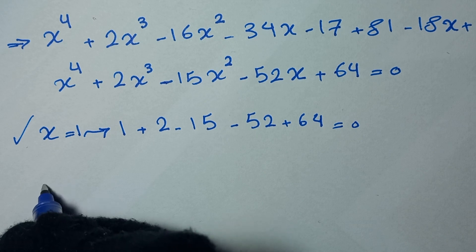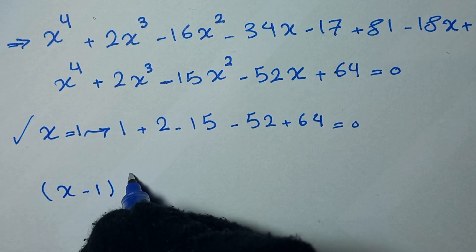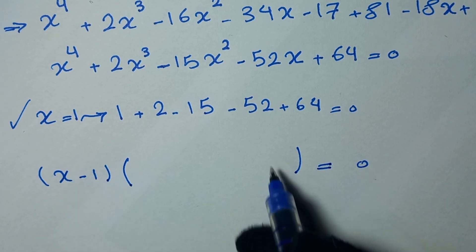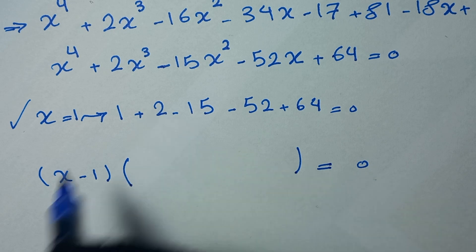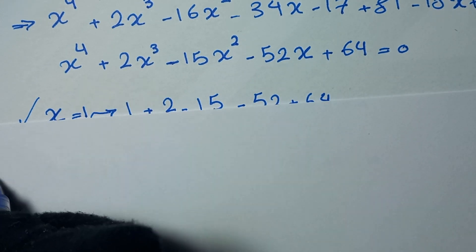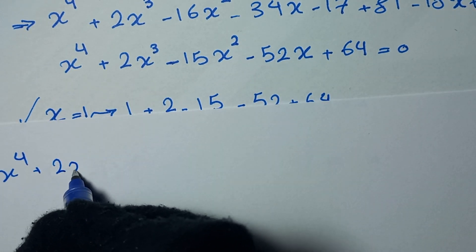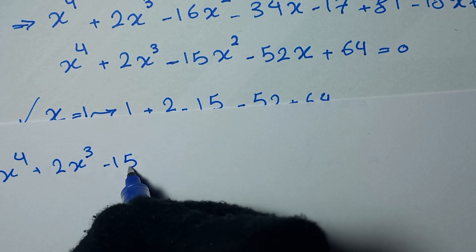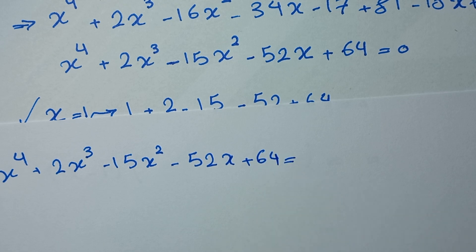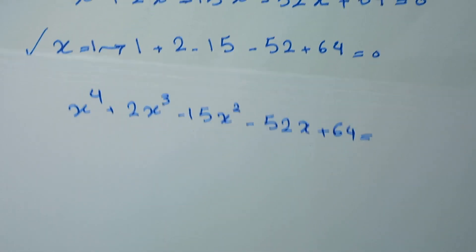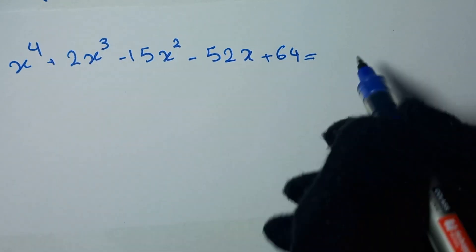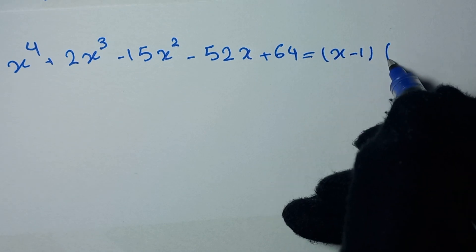We can write this equation with x equals 1 as x minus 1 times a bracket is equal to zero. So x to the power of 4 plus 2x cubed minus 15x squared minus 52x plus 64 equals x minus 1 times this bracket. To find this bracket we can divide both sides of the equation by x minus 1.